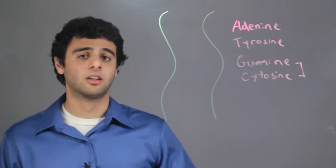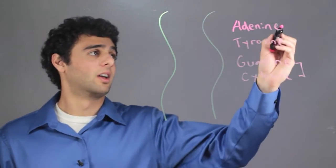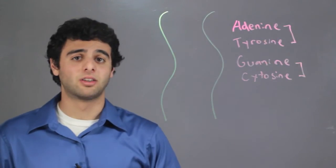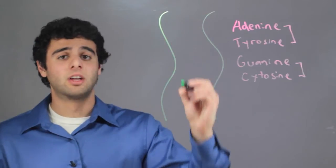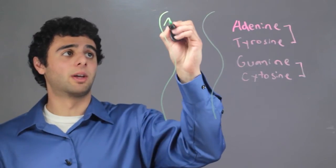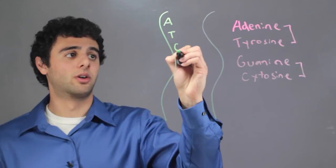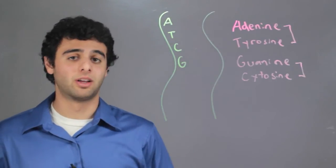Guanine and cytosine always bind together, and adenine and tyrosine always bind together in DNA. So, over here, in the first strand of DNA, I'm going to pick four random bases in random order.